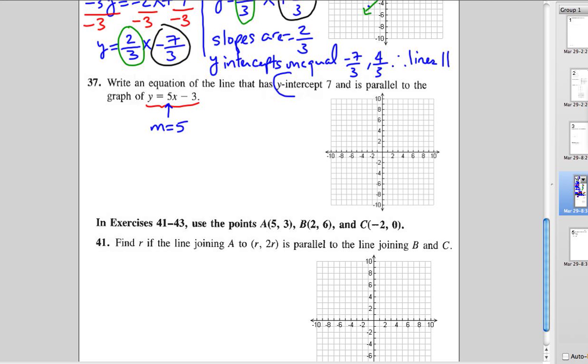Now we want another line where the y-intercept is 7. See, in this equation, the y-intercept is negative 3. So we're almost done. This is not a lot of work. It's just that the new equation will be y equals 5x plus 7. There's our answer right there.